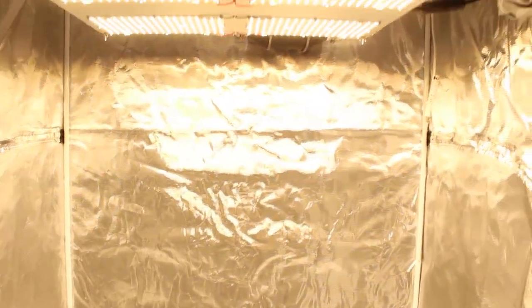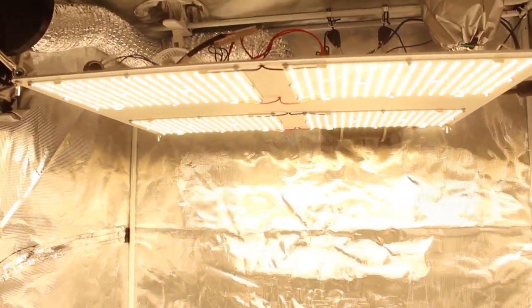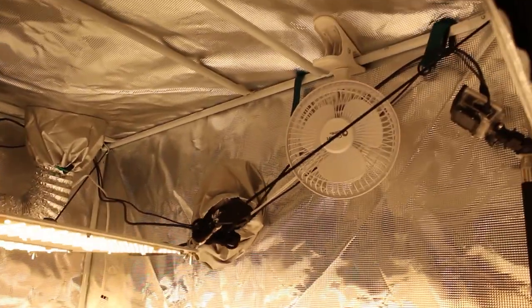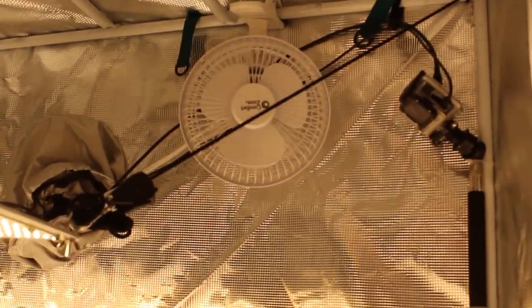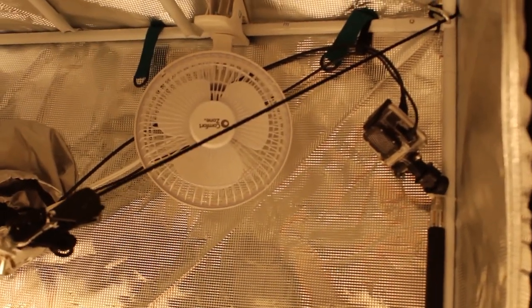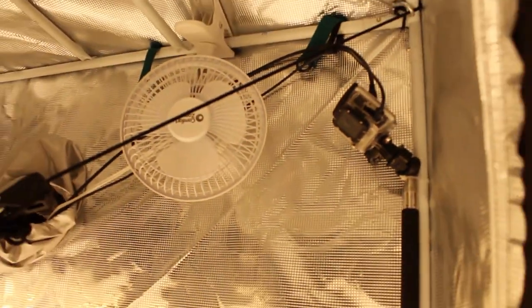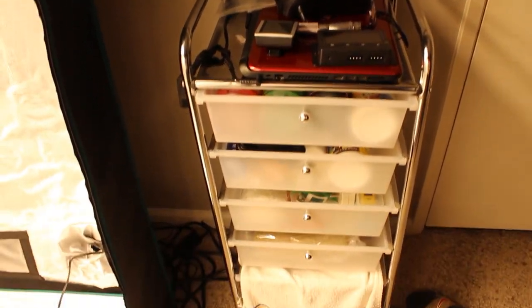The next item in our tent that I forgot to mention earlier is actually this GoPro. This GoPro is a Hero 3. Basically what we're doing with this is we have a power cord hooked up to it and we have a laptop right here. It's going to be constantly streaming a live feed of our plants. We're going to be able to get some good time-lapse photos and videos from that and be able to show you that seed to harvest video at the very end of our journey.